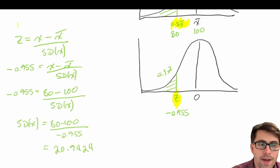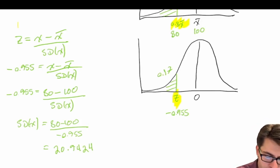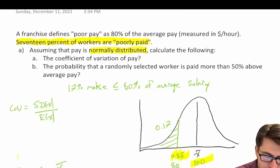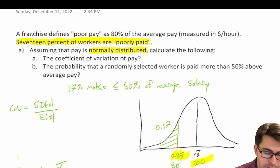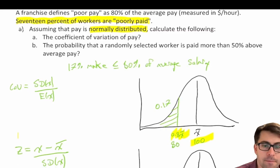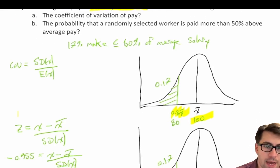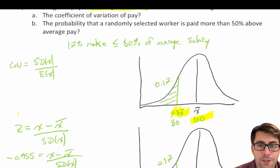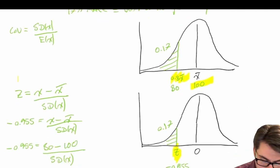Why is it important that we could just assume an expected value here? Because we're told pay is normally distributed and we're not necessarily interested in the exact average pay — we're interested in the value 80 percent below the expected value and the probability associated with it. We can assume an expected value and calculate the standard deviation accordingly, since the normal distribution's properties remain consistent.